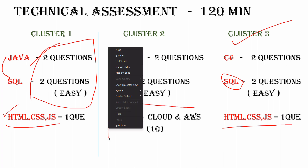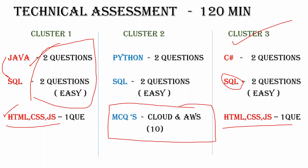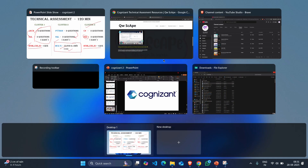In the Python cluster, you can get MCQ questions related to cloud-based — specifically AWS-based. They are having 10 MCQ questions, and each MCQ question is very important because if you did not perform well in Python and SQL, they will consider the MCQ questions. So everyone please remember — you need to complete all 10 questions correctly; then only there is a high chance of receiving your offer email. Now I will share some of the MCQ questions.